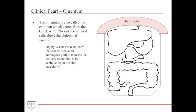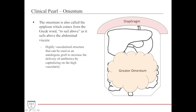The greater omentum is a highly vascularized structure that attaches from the greater curvature of the stomach and descends over the abdominal viscera. Because it is so vascularized, surgeons can actually use the greater omentum as a flap to cover infected sites, aiding in transportation of antibiotics in a timely manner.